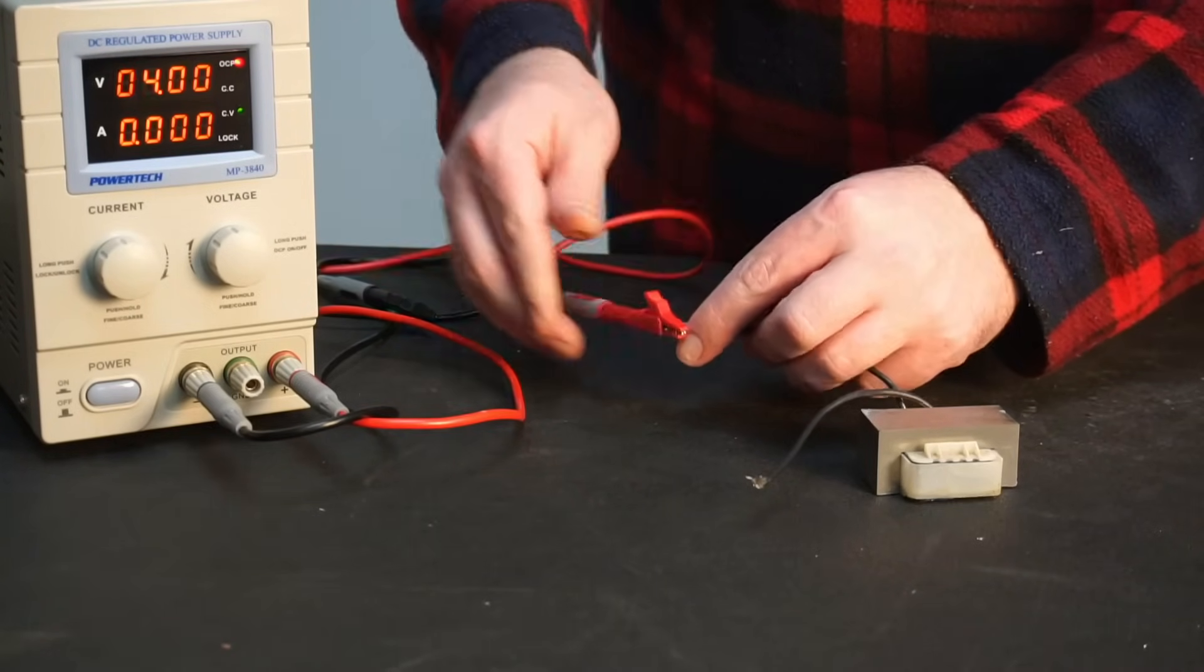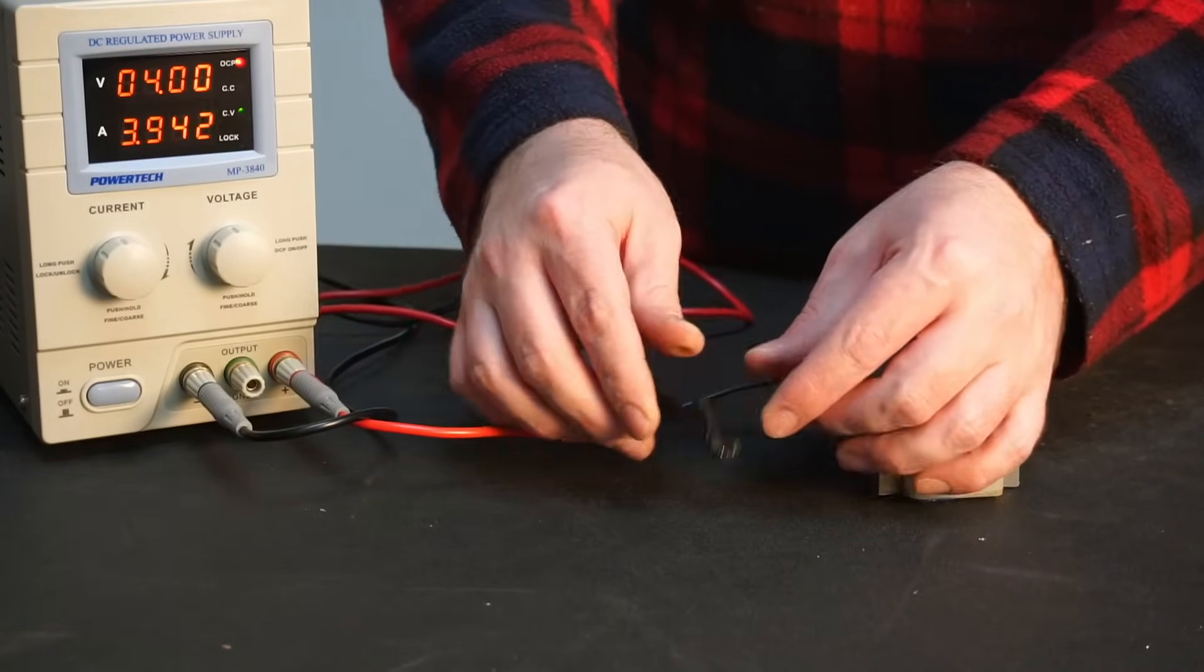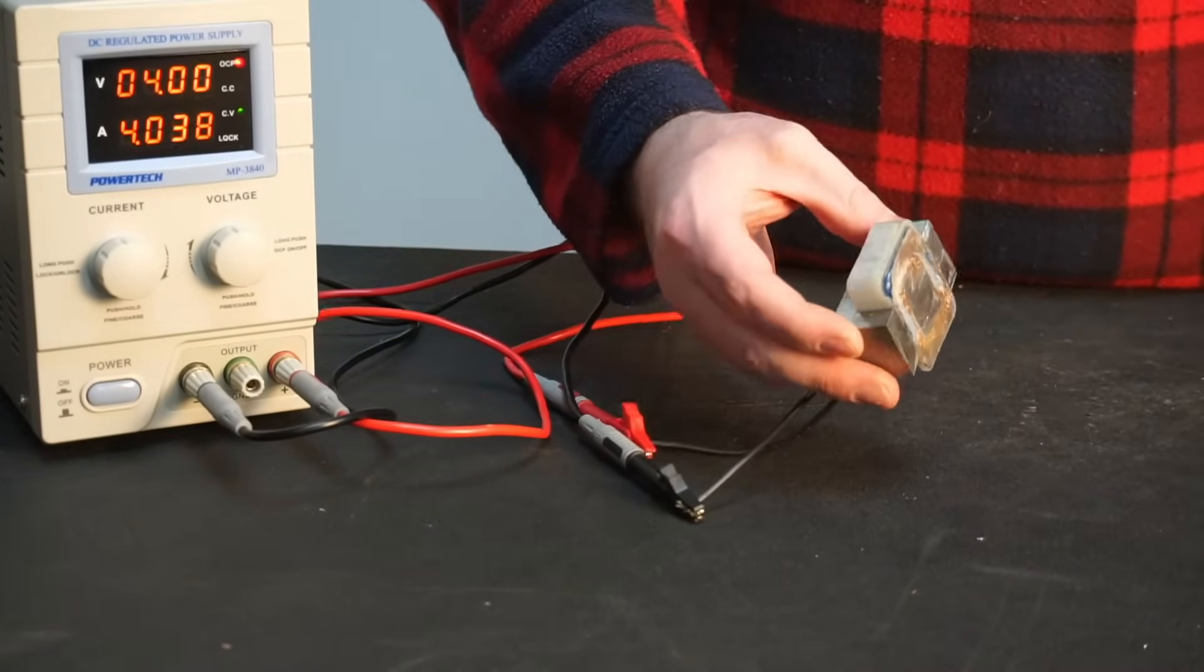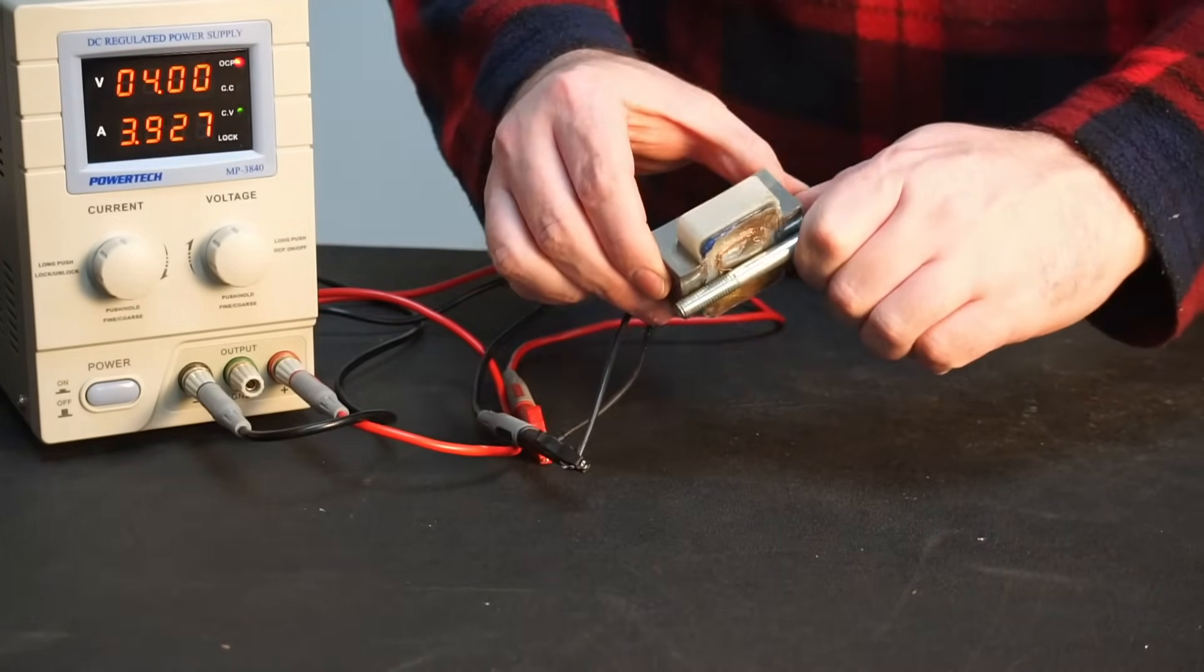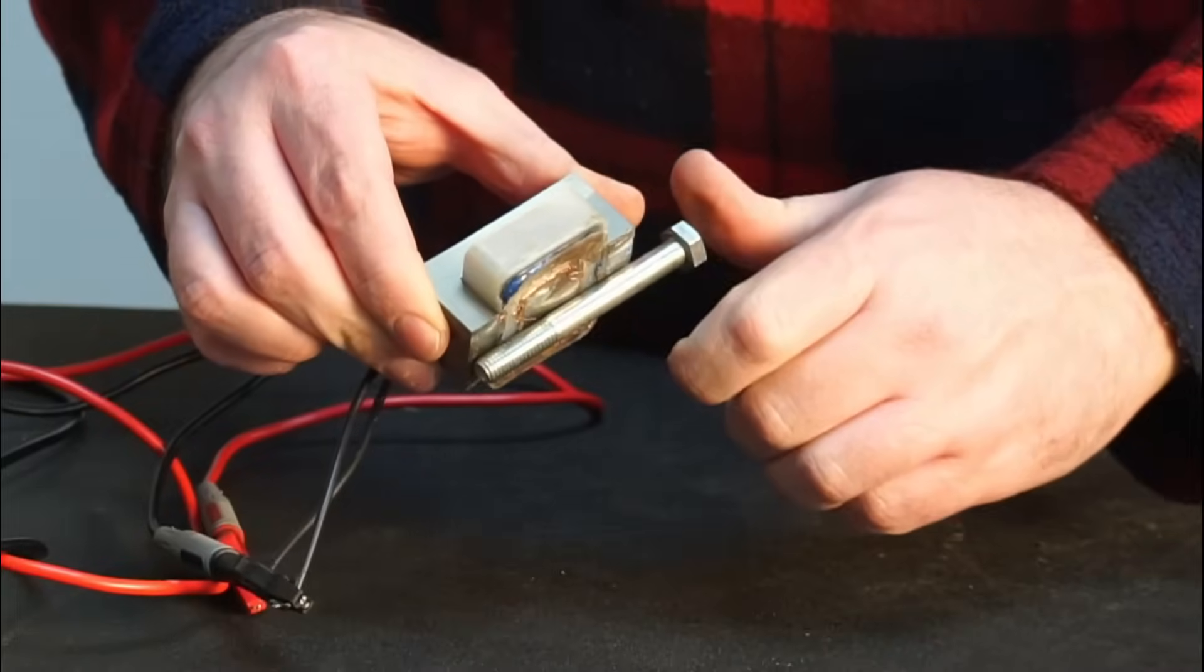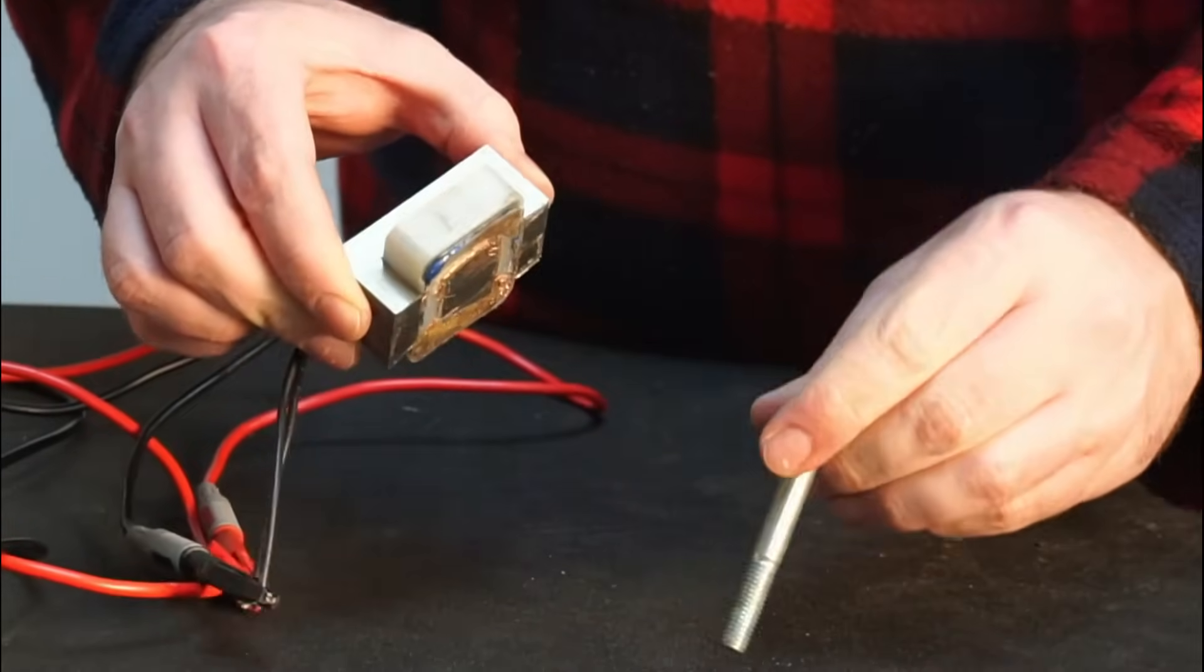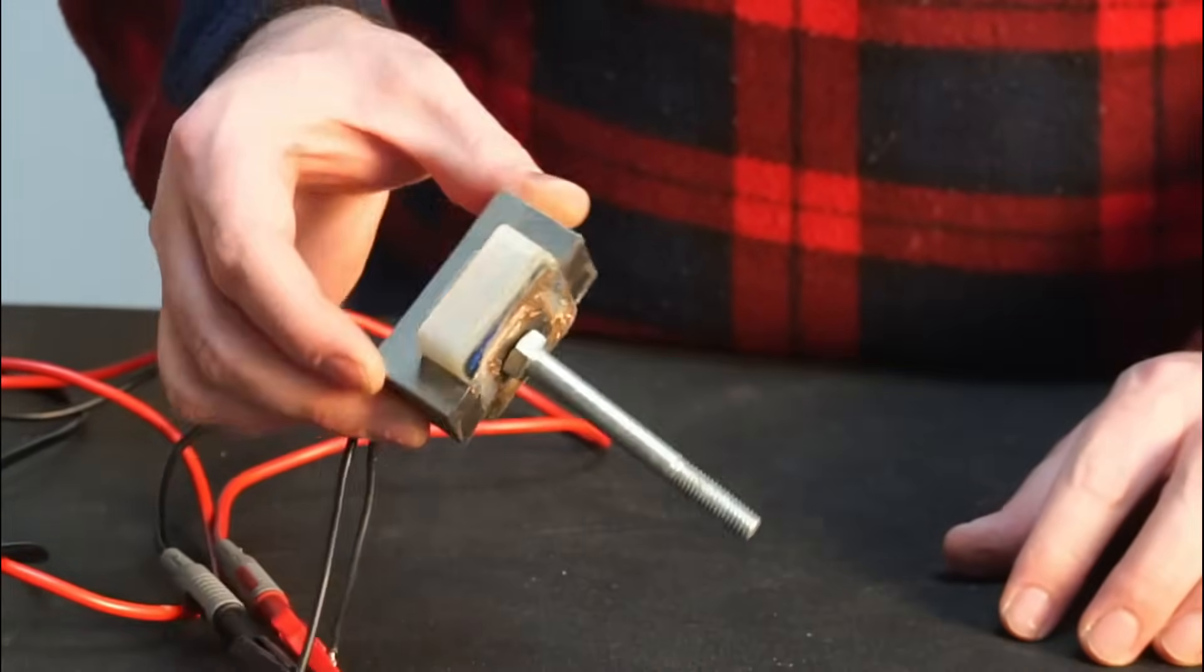With that done, it was time to connect it up to my power supply again. I have the same amount of power passing through the winding just as before, but this time the magnetic field is many times stronger. It took a surprising amount of effort to pull the bolt away from the electromagnet.